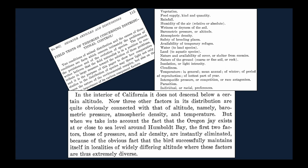Grinnell went on to provide a nice list of factors: vegetation, rainfall, wetness or dryness of the soil, and all sorts of features of the natural environment. Almost all of this list is physical features of the environment, but at the end he includes interspecific pressure or competition and parasitism. Grinnell's emphasis was on physical features of the environment and not so much on interactions with other species.